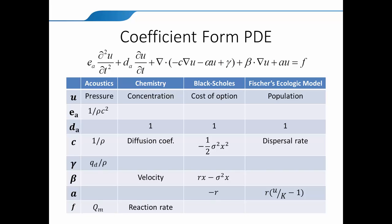Or if you are doing chemistry, you don't have Ea. Ea would be 1. The independent variable you are solving for U would be concentration. C would be a diffusion coefficient. If you have advection, beta would be your advection velocity. And then F would be your reaction rate.